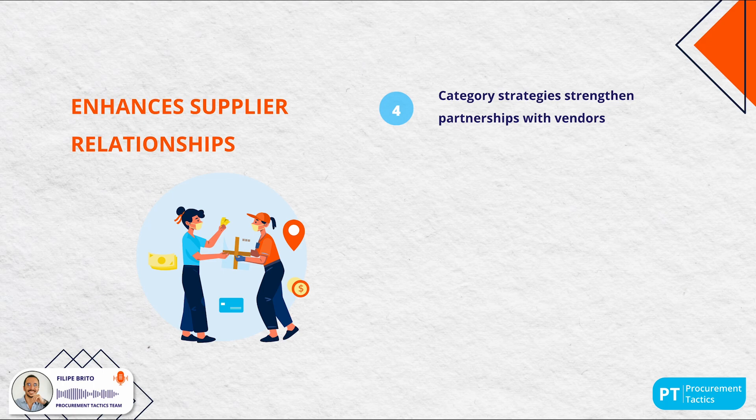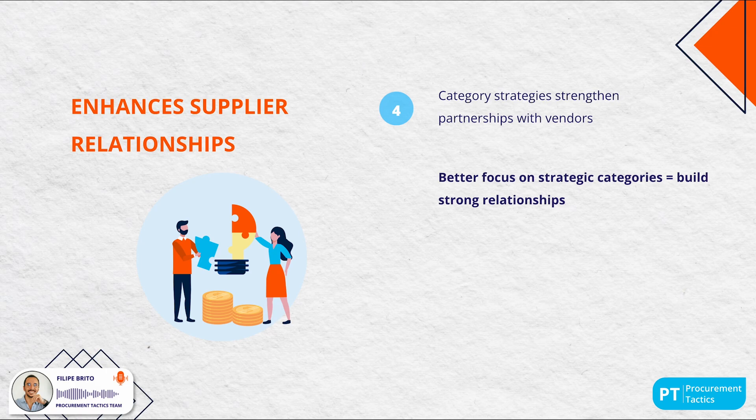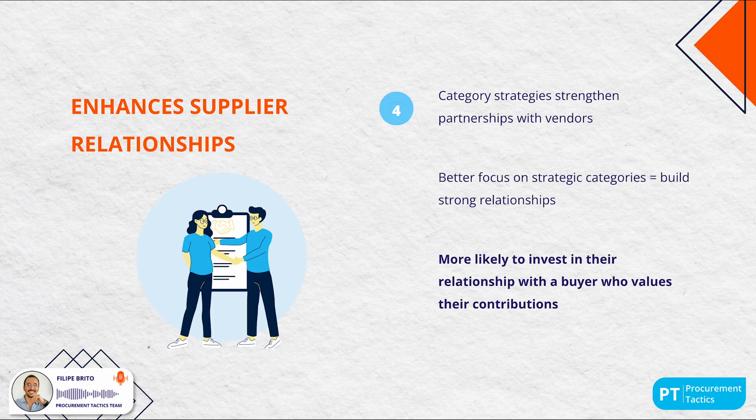Category management also enhances supplier relationships. Because category management strategies bring benefits to stakeholders and suppliers, procurement teams can enjoy stronger partnerships with vendors. By focusing on strategic categories, teams develop long-term partnerships with key suppliers, leading to improved supplier performance, innovation and mutual benefits. Suppliers are more likely to invest in their relationship with a buyer who demonstrates a clear understanding of their market and values their contributions.